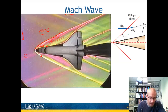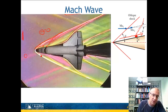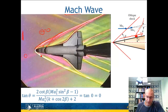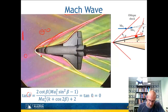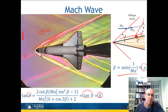Using the theta-beta-Mach relationship with theta = 0, the tangent of zero is zero, and the equation simplifies. The Mach wave angle mu = arcsin(1/Mach number). This symbol mu is used for the Mach wave angle.